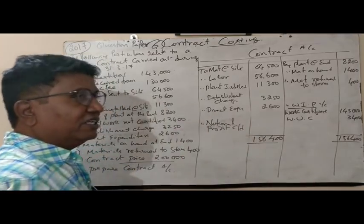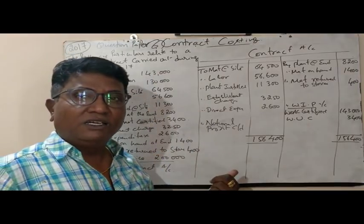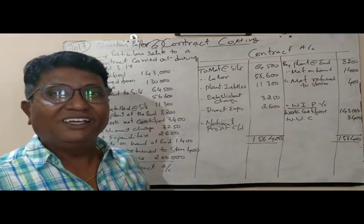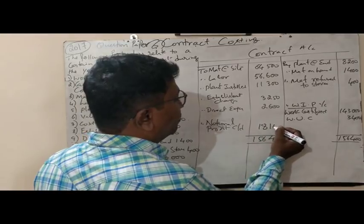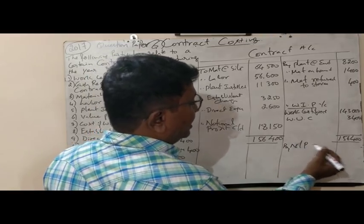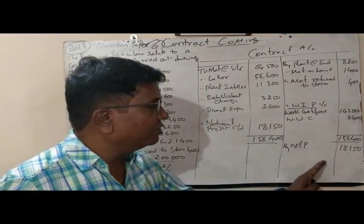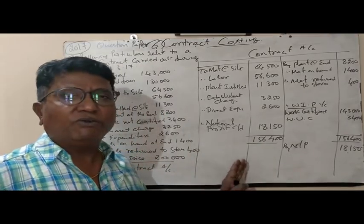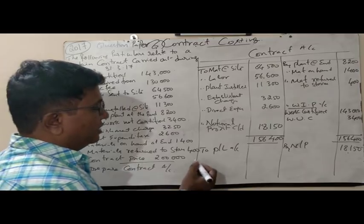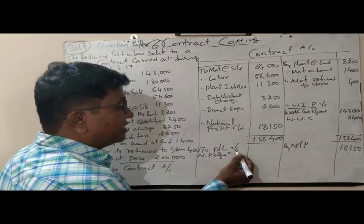We call it notional profit because the contract is not completed — the contract price was 2,00,000 but only 1,43,000 was certified. So we don't call it net profit; we call it notional profit, which comes to 18,150 rupees. This is carried down and brought down because a part of the notional profit should be transferred to reserve and the remaining to profit and loss account. The formula is: Notional Profit × 2/3 × (Cash Received ÷ Work Certified).